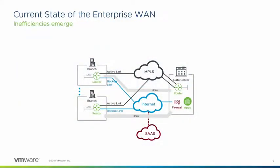Let's step back and look at how branches are deployed today in existing enterprise networks. In the classic network diagram, you see the data center on the right connecting to multiple branch locations. All branch locations are connected with an MPLS link used as an active link, with dedicated internet access or broadband as a backup link using IPsec tunnels. The objective is to move applications into the data center for branches to consume, but SaaS applications have become increasingly common in these deployments as well.